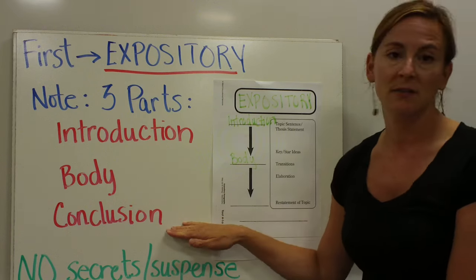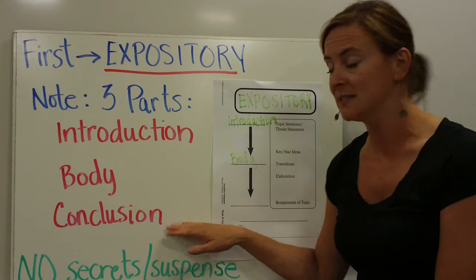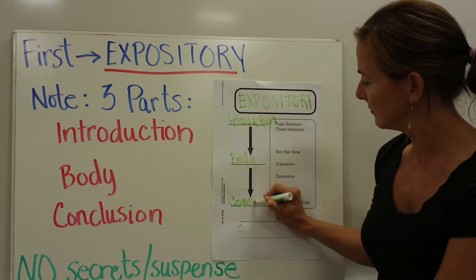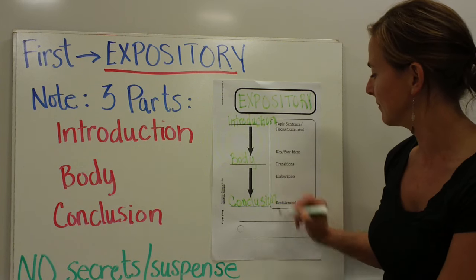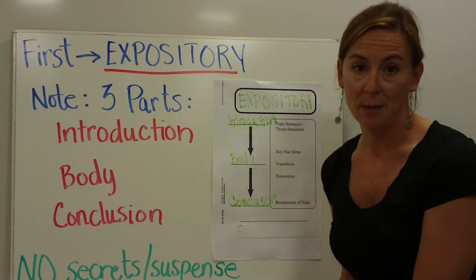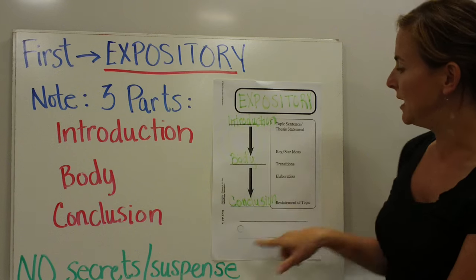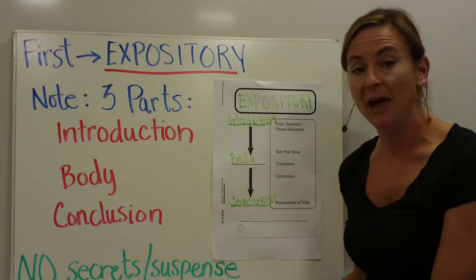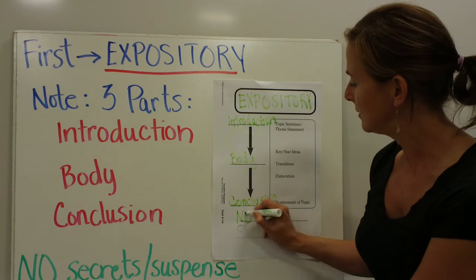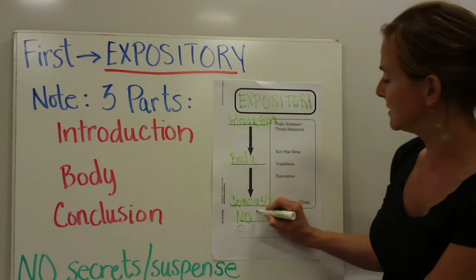The last part of an expository piece of writing is the conclusion. The conclusion restates the topic. The last thing you need to put on your toolbox piece of paper at the bottom is no secrets or suspense.